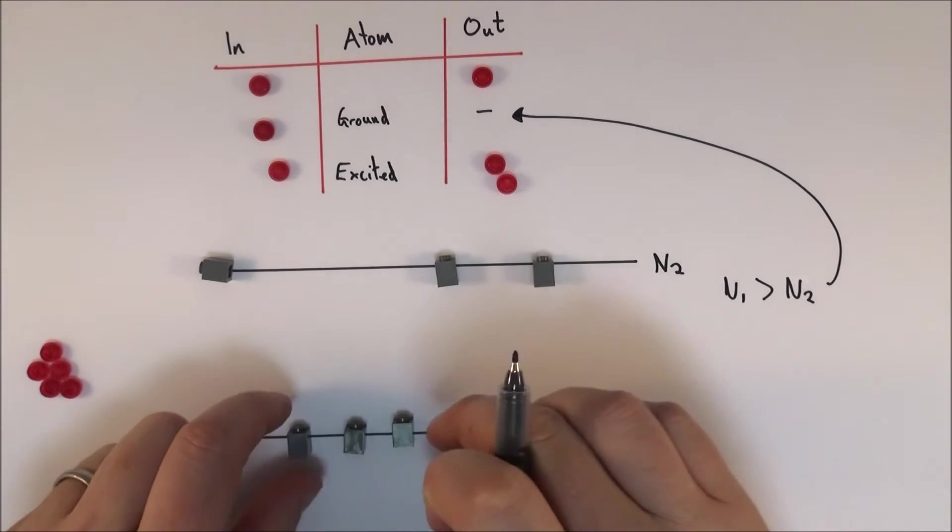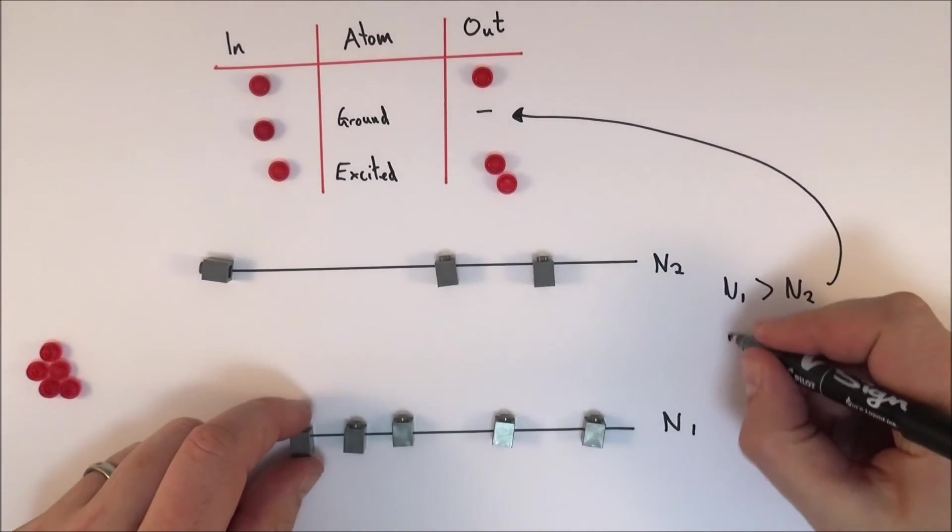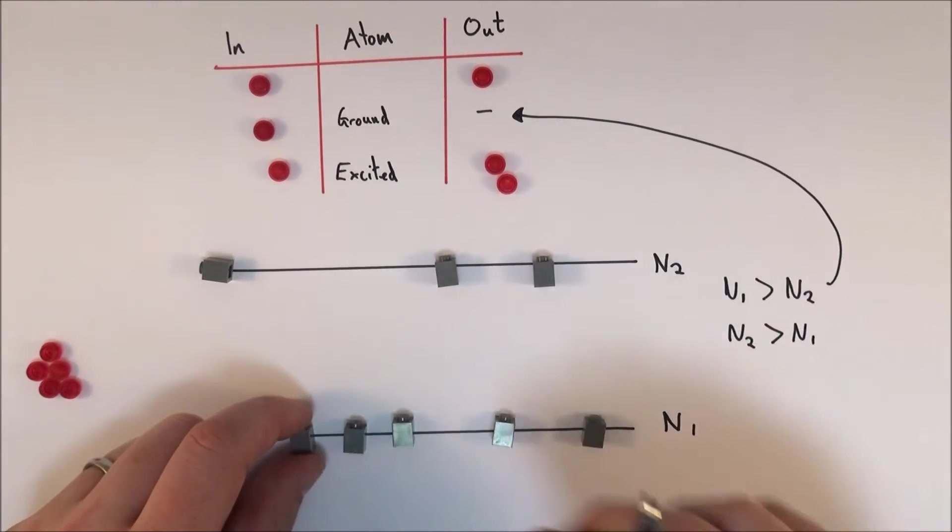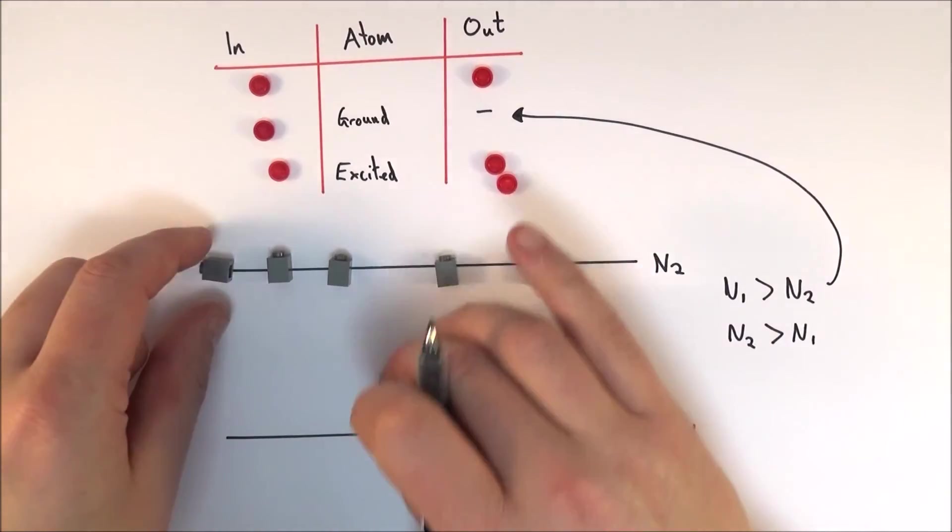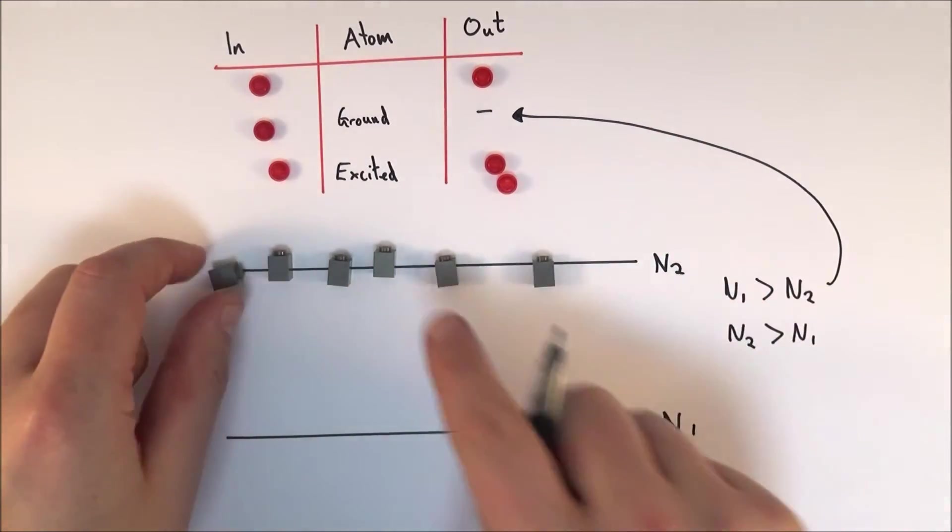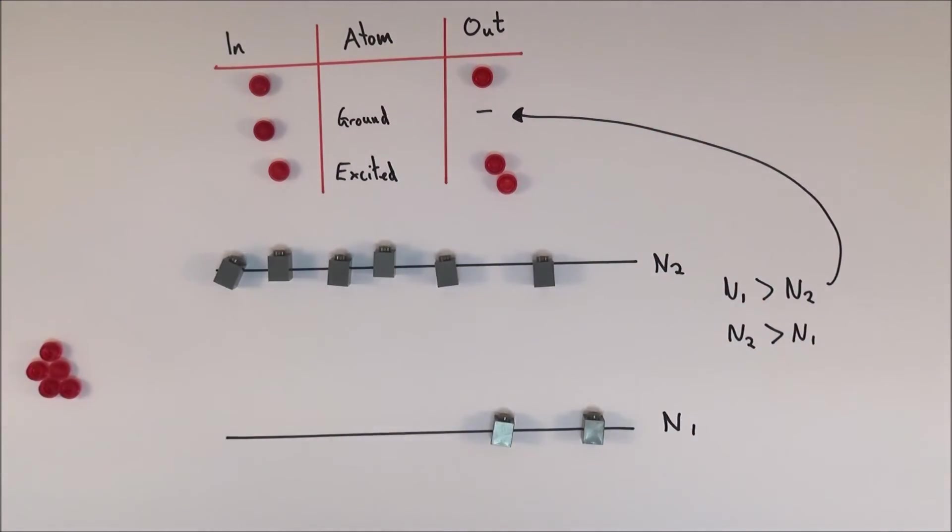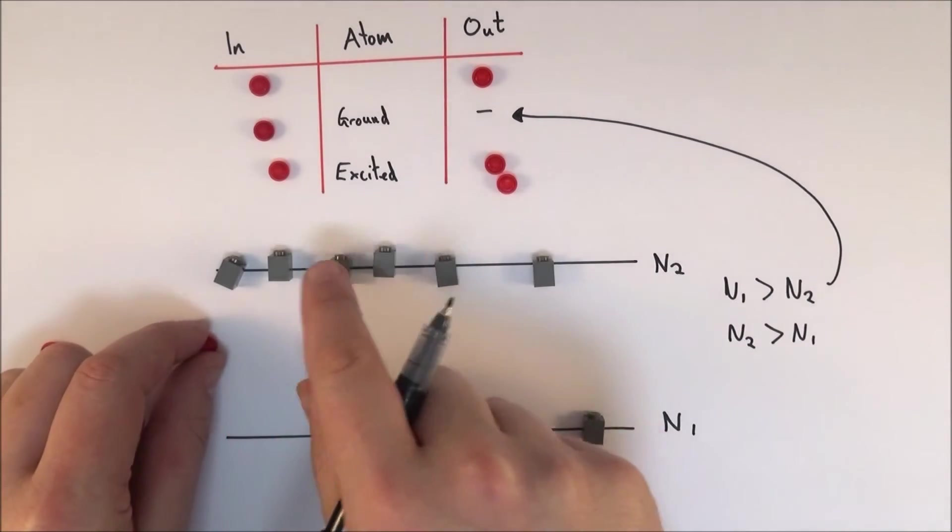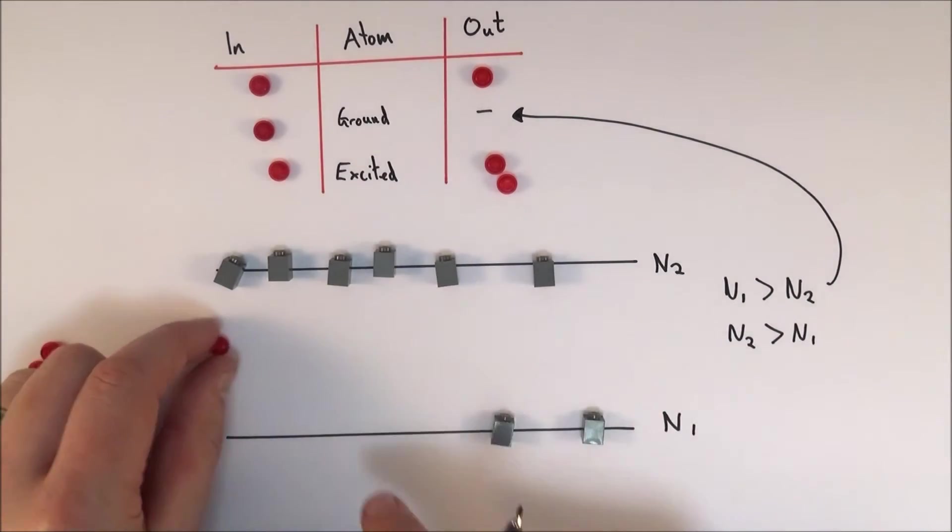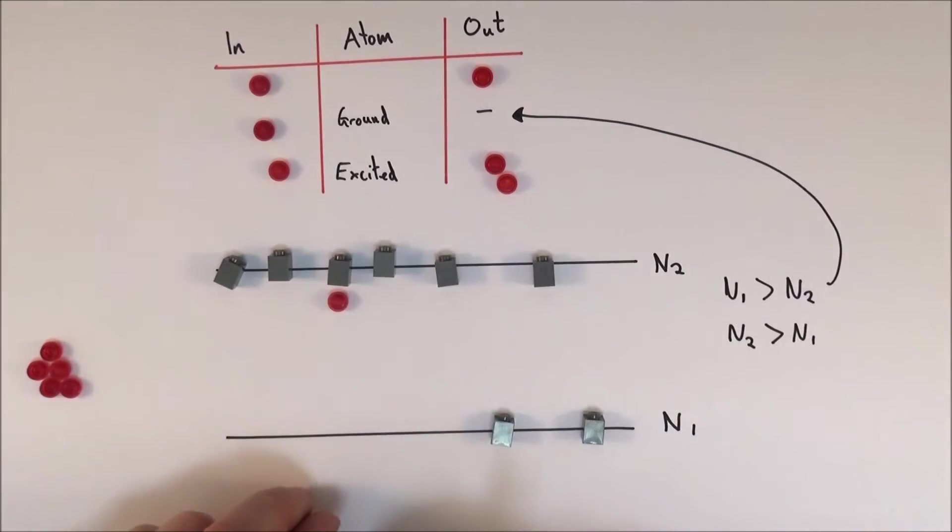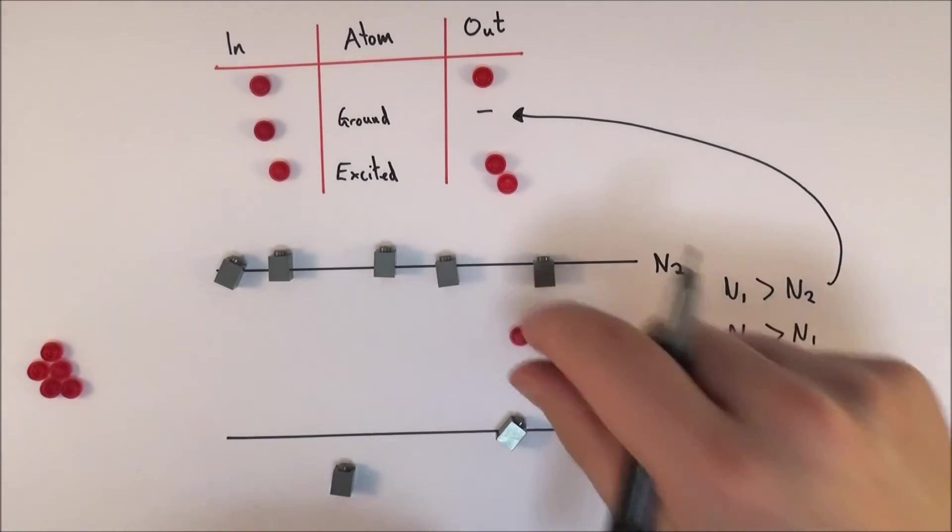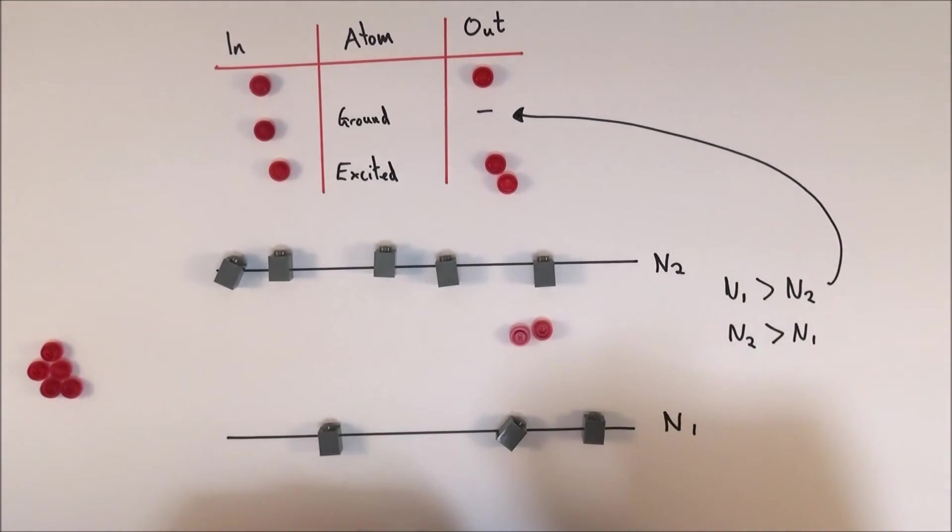What we really want is something where n2 is bigger than n1. If n2 is bigger than n1, like we have maybe here now with 6 to 2, if you've got a photon that comes in, it's more likely to interact with the larger population. And if this interacts with this one here perhaps, well this one's going to drop down and then two photons are going to come out. This is what we want. This is when you get that stimulated emission of radiation.